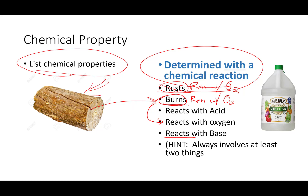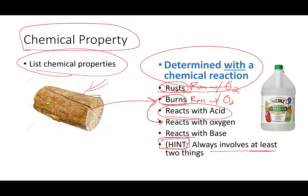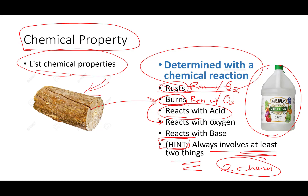Some things react with bases. Some things like metals react with acids. Whenever you talk about a chemical property, the big hint is it always involves at least two different things — it's not one chemical, it's two chemicals. If you pour vinegar or acid on something organic like a piece of wood, it's going to dehydrate it, turn it black or brown, and change its chemical structure.